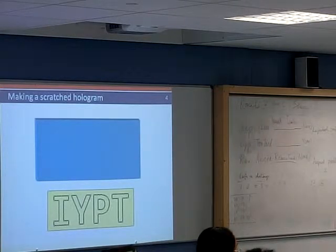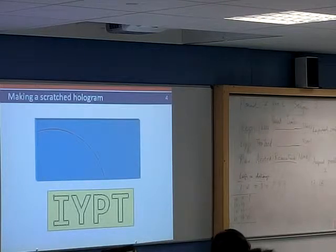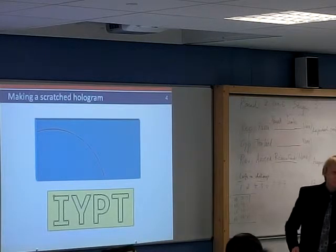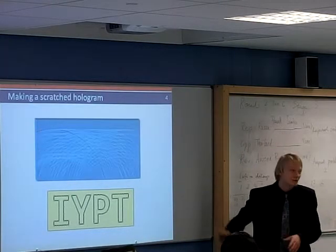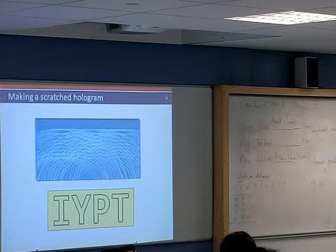Using compasses with constant radius, you have to scratch circular arcs with the geometrical center in each point respectively. Moving straight on and following this instruction, we got no hologram but intercourse and circular arcs, and it's very difficult to notice IYPT letters here.